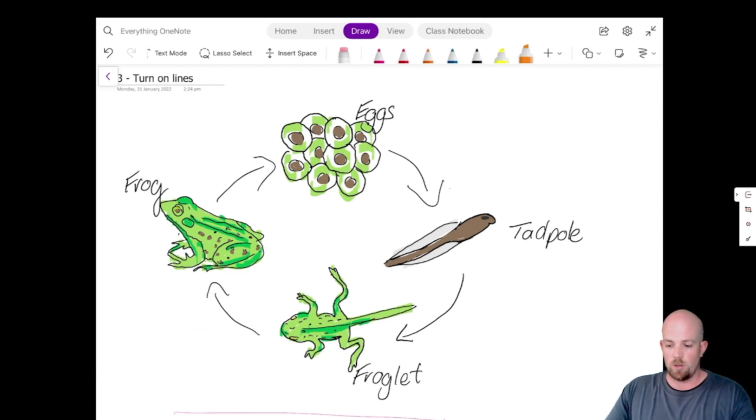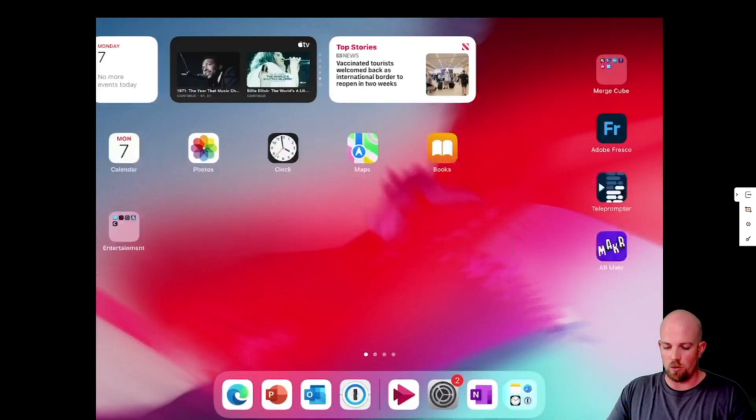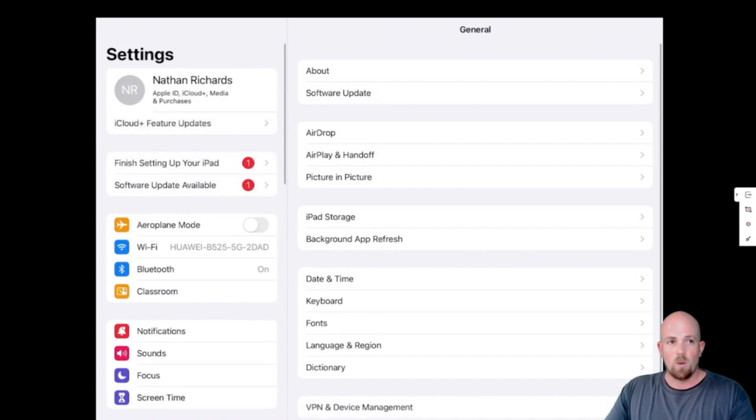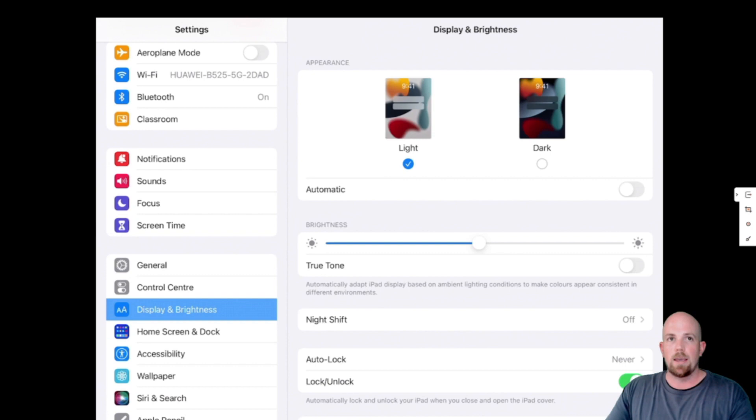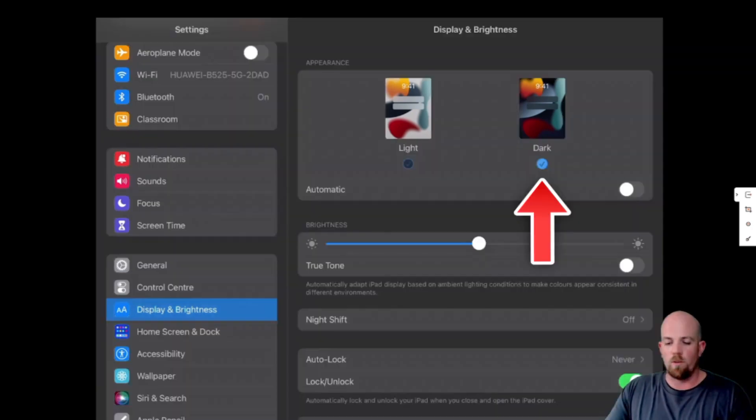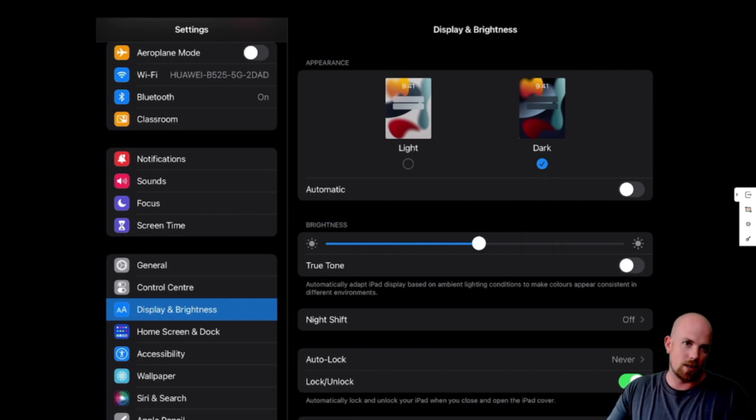So to do that, what we have to do is come back out and go to settings. Once we're in settings, we want to come down to display and brightness. And then we'll switch here the appearance from light over to dark. Now we'll make the whole aesthetic dark. This is the only way to turn it on in OneNote.